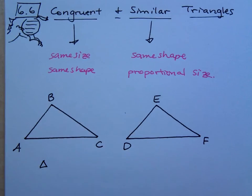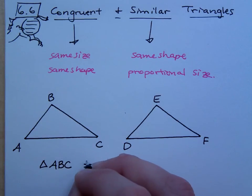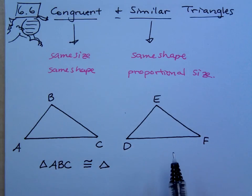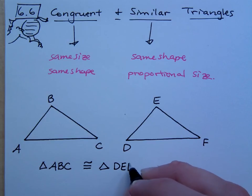So, if I were to say triangle ABC is congruent, so we use that weird symbol again. Now, if I'm saying that it's congruent to this other triangle, I need to make sure that I have corresponding pieces lined up correctly. So, in this diagram, it looks like D matches up to A, the E matches up to B, and F matches up to C.